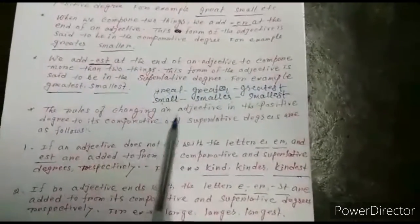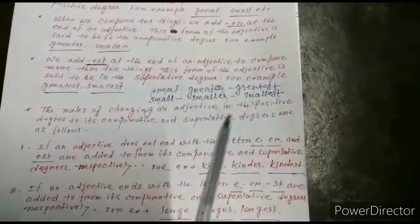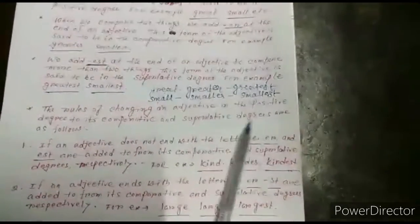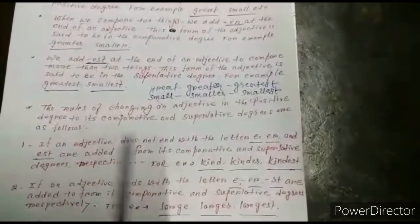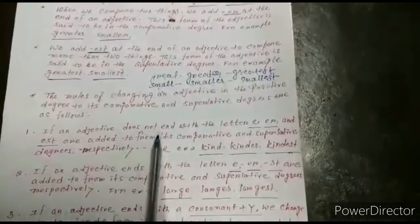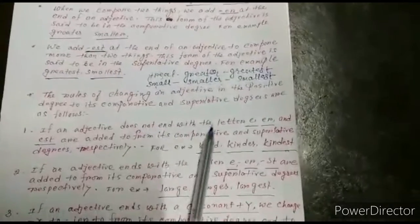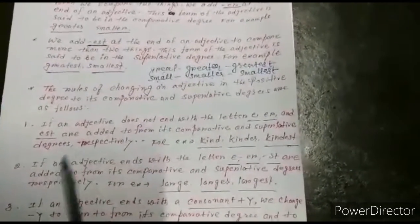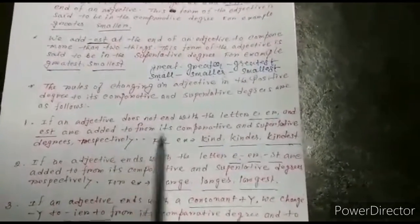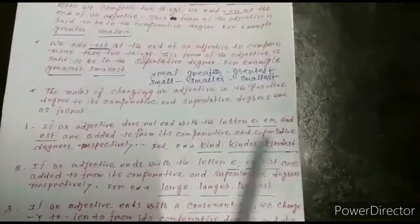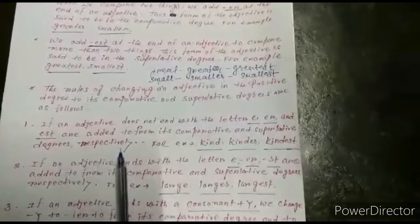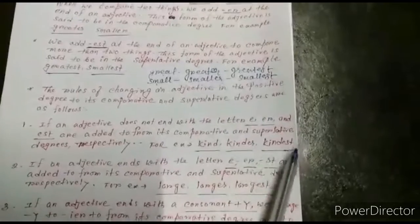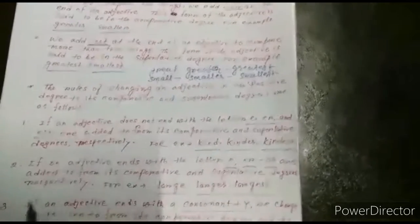The rules of changing an adjective from the positive degree to its comparative and superlative degrees are as follows. Rule 1: If an adjective does not end with the letter E, ER and EST are added. For example: kind → kinder → kindest.